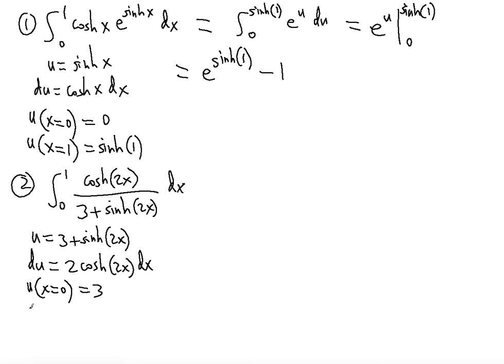u as a function of x when x equals 1 we'll get 3 plus sinh of 2. 2 times 1 is 2, so it's just 3 plus sinh of 2. And 3 plus sinh of 2 is greater than 3, so we're doing okay. We're still getting consistency in terms of having the upper limit and the lower limit of integration.